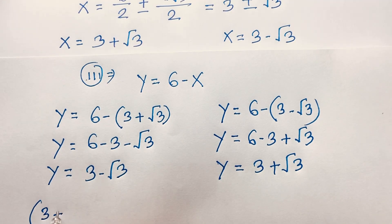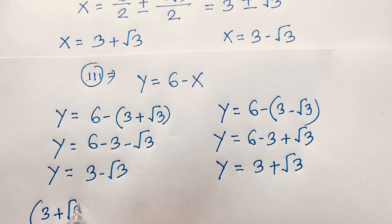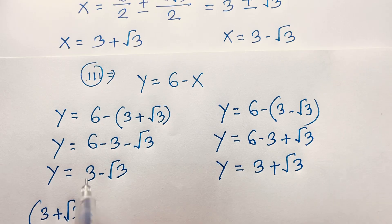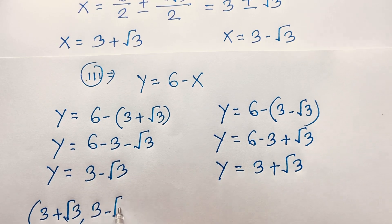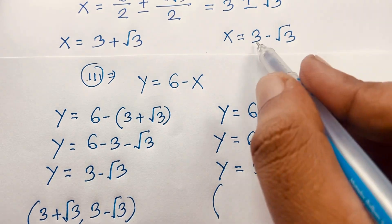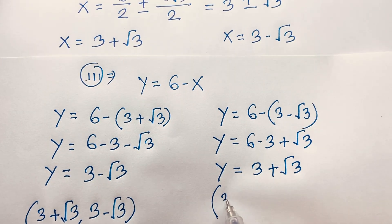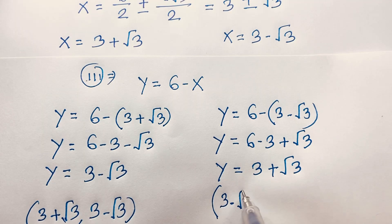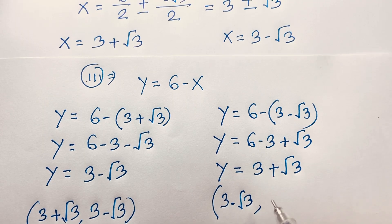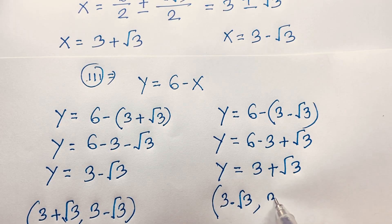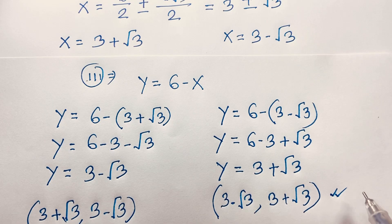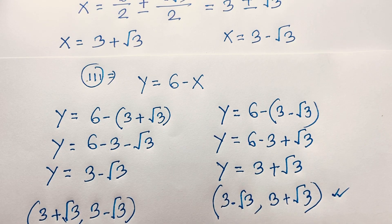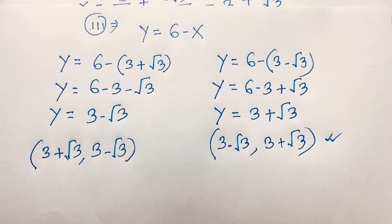So our final answer is: when x equals 3 plus square root 3, then y equals 3 minus square root 3; and when x equals 3 minus square root 3, then y equals 3 plus square root 3. This is our final answer to this math olympiad question.